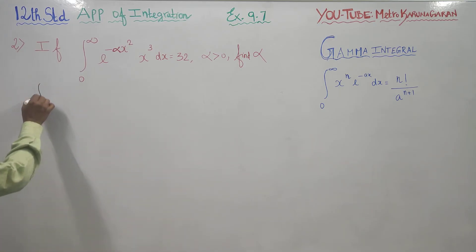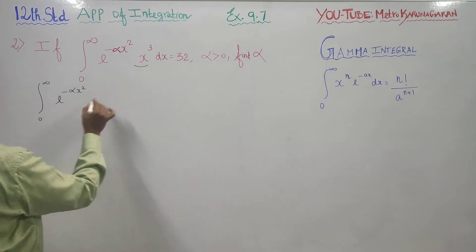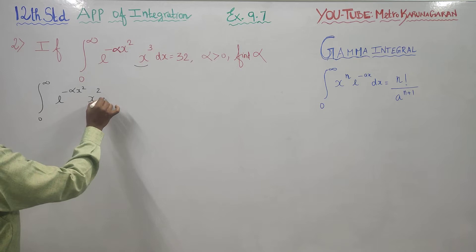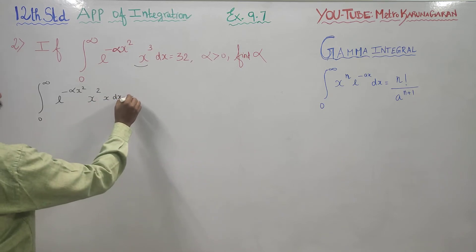E to the power minus alpha x squared, I am going to change this as x squared times x dx equals 32. The value of this is 32.